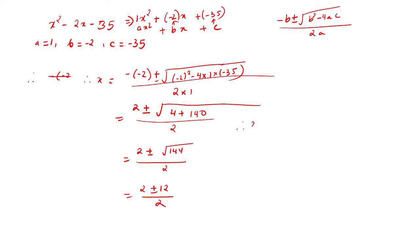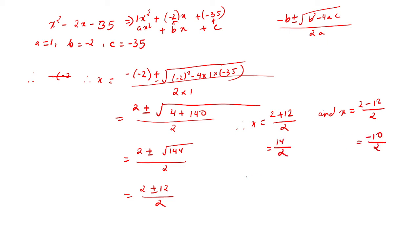2 plus or minus root of 144 by 2. So this becomes 2 plus or minus 12 by 2. Therefore, x equals 2 plus 12 by 2, and x equals 2 minus 12 by 2. This gives 14 by 2 and minus 10 by 2 — so x equals 7 and x equals minus 5. Therefore, the other zeros are 7 and minus 5.